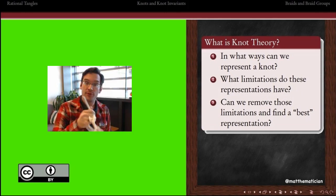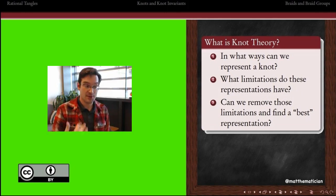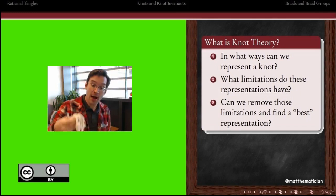Particularly in this first introduction, we're going to pay attention to questions about representation. What are some of the ways that we can represent knots? What are some of the limitations that are inherent to representing a knot in one way versus another way? And then most crucially, is there a way for us to mitigate those limitations? Can we find a best way to represent a knot?